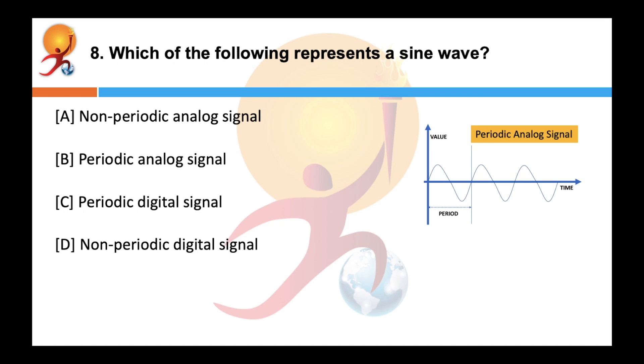Which of the following represents a sine wave? Correct answer is periodic analog signal. A sine wave is the most fundamental form of periodic analog signal.